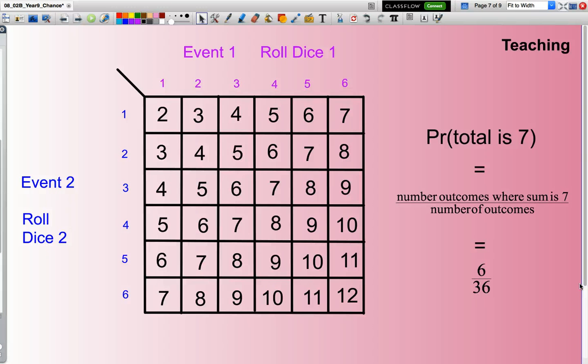Just to summarise, a two-way table, such as what I have represented here, some textbooks might call this just a table, is a convenient mechanism or a good diagram to represent all the outcomes when I am working with two events. My two events, this time, were rolling one dice and another dice.